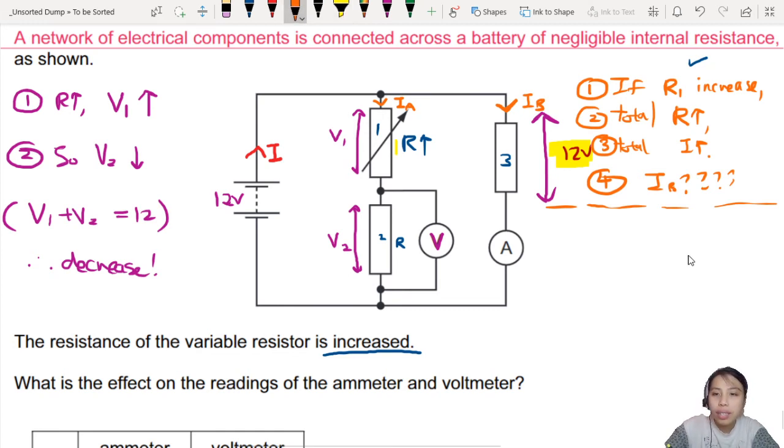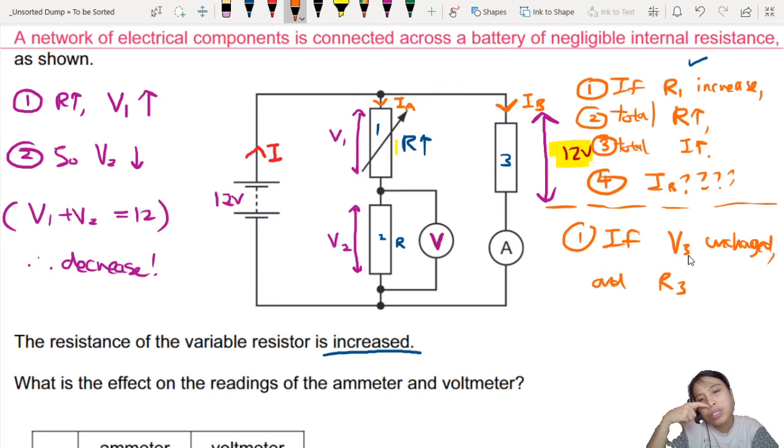The reasoning is... If the potential difference across 3 is unchanged... And how about the resistance of 3? Did it change? No, it was resistance 1 that changed. So R3 is also unchanged.